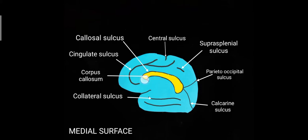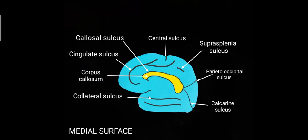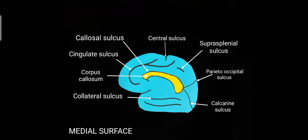On the medial surface you can see a yellow marked area that represents the connection between the left and right hemispheres of the cerebrum — that is the corpus callosum, which is composed of commissural fibers. Immediately above the corpus callosum you can see a sulcus called the callosal sulcus, and a little above running parallel to it is the cingulate sulcus.